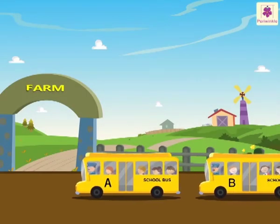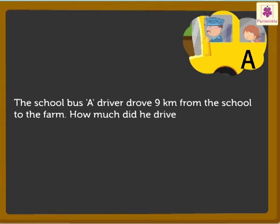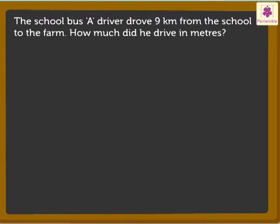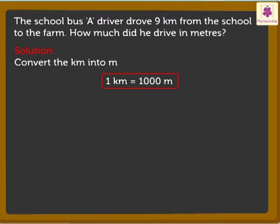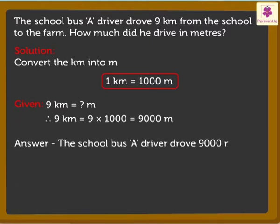Look, they have reached the farm. The school bus A driver drove 9 kilometers from the school to the farm. How much did he drive in meters? To find out the answer in meters, we need to convert the kilometers into meters. We already know that 1 kilometer is equal to 1,000 meters. Here, we have to convert 9 kilometers into meters. So, 9 into 1,000 is equal to 9,000 meters. So, the driver drove 9,000 meters from the school to the farm.